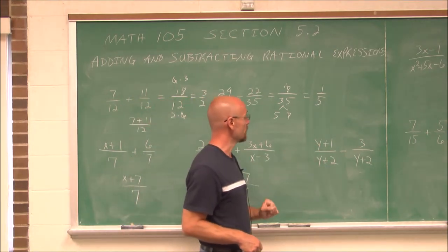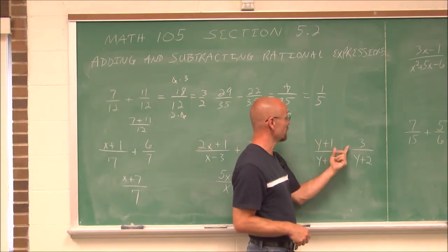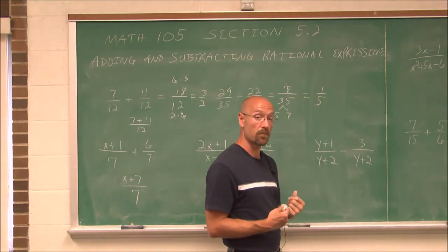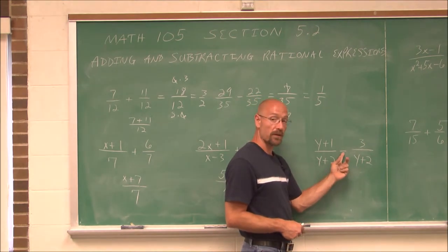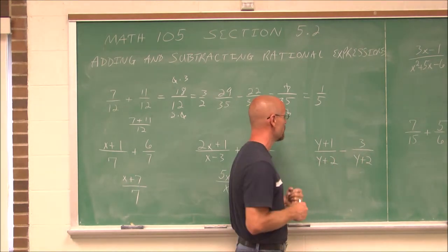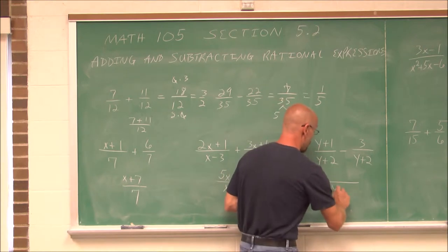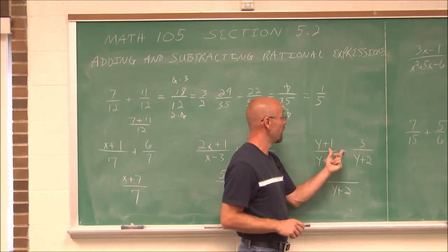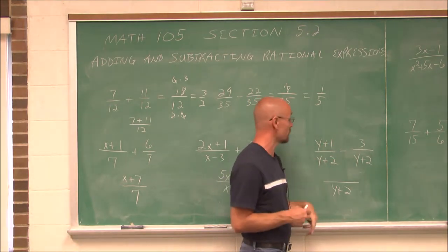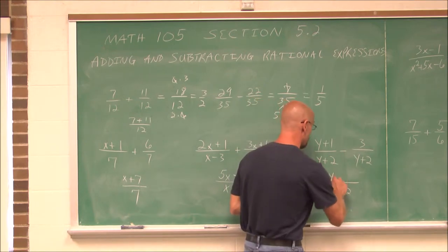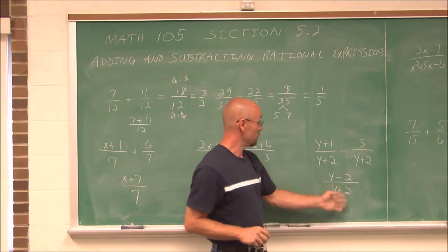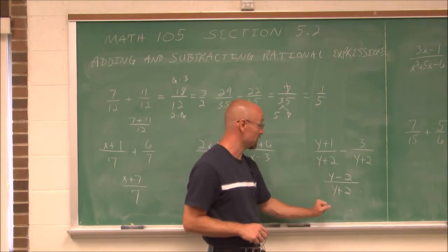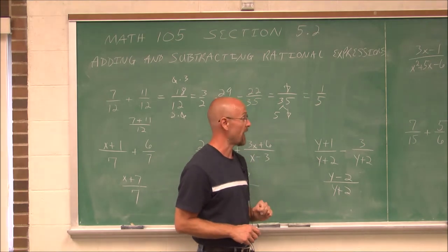If we have y plus 1 minus 3, both have a common denominator of y plus 2, so we can combine like terms. When it's subtraction, be very aware of that sign. It's 1 minus 3 — those are the like terms, just numbers — and 1 minus 3 is negative 2. So we get y minus 2 over y plus 2. We can't cancel any of these values because they are terms, not factors.